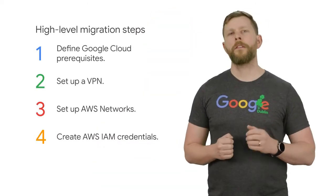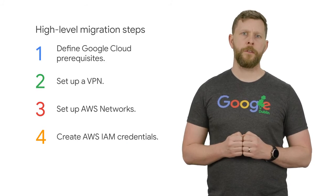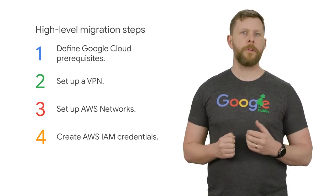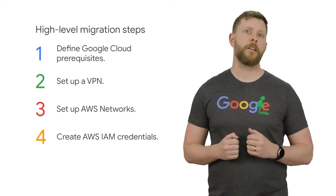Set up AWS networks and check network access requirements for detailed information on firewall, routing, and network tag considerations for your Migrate for Compute Engine deployment. Create AWS IAM groups and credentials that will enable Migrate for Compute Engine to connect to AWS.